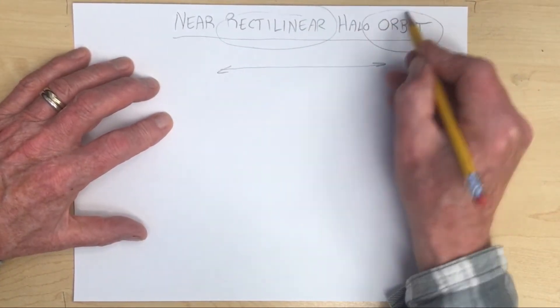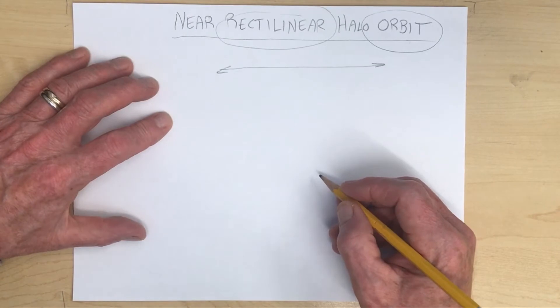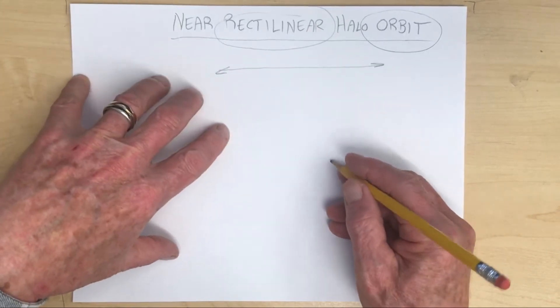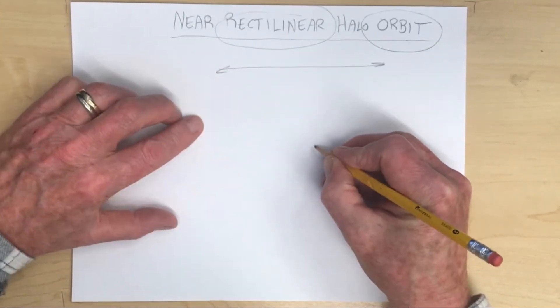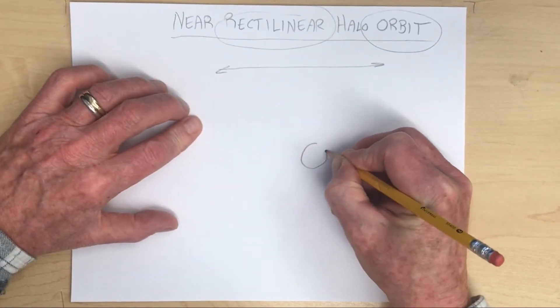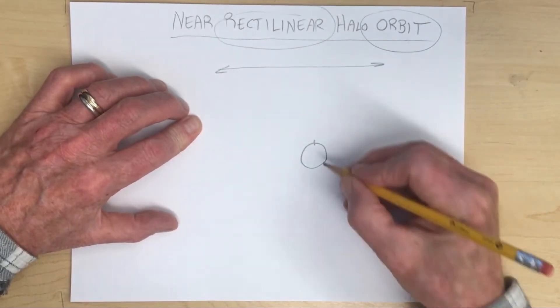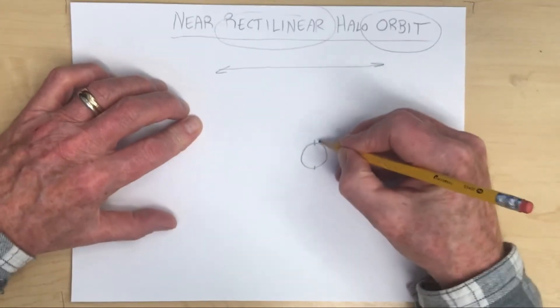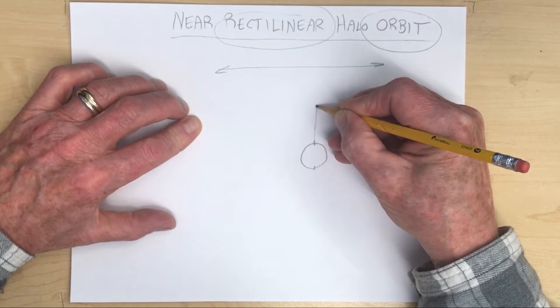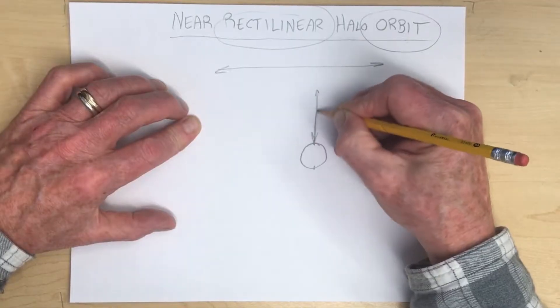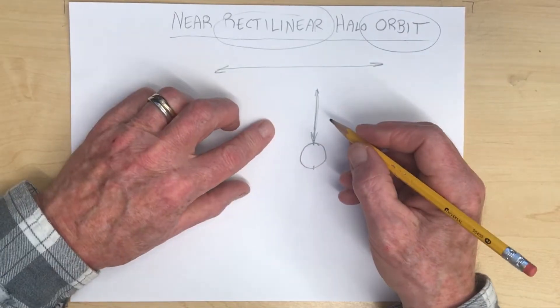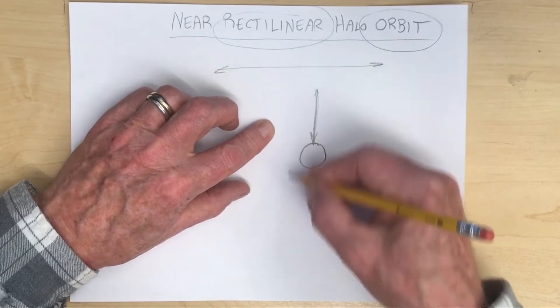Let's take the next word: orbit. A true rectilinear orbit would be an orbit that moves only in one dimension — an orbit that moves in a straight line. So let's say I'm standing on the north pole of the moon. If I throw an object straight up and let it come straight back down, that would be a straight line. We could call that an orbit, although we usually think of an orbit as going around an object.